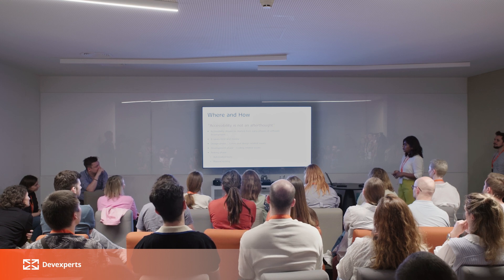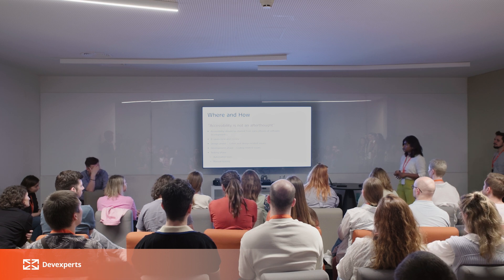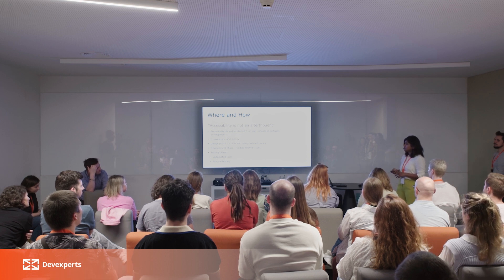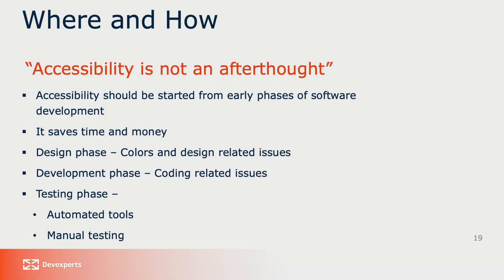Now, how and where can you start accessibility in your project? Accessibility is not an afterthought — we have to start from the very early phase of the software development life cycle, which will really save your time and money. Here at DevXquad, we usually start from the design phase. We review the designs and mostly address color and design-related issues in the design phase. Then in the development phase, we do code reviews, focusing mostly on coding-related issues. And then in the testing phase, we actually perform testing with automated tools and manually.